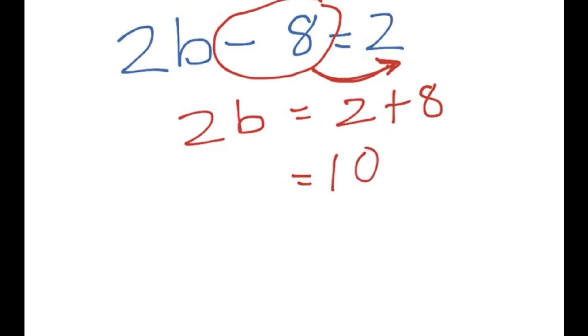So 2 plus 8 is 10 and we have a 2b on the left hand side. And therefore b is just 10 divided by 2. So we move this 2 to the other side and we divide by 2. And we end up with 10 divided by 2 which is 5. And there we have it.